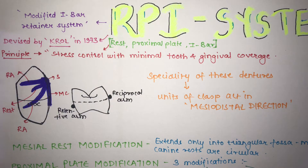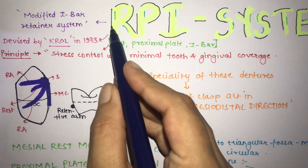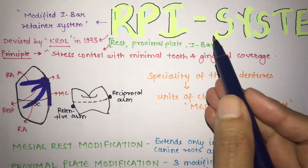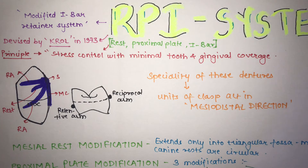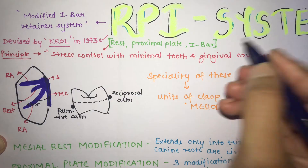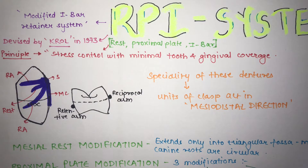The topic is the RPI system for removable partial dentures. There are various special types of removable partial dentures, and the RPI system is one of them. RPI stands for Rest, Proximal plate, and I-bar. The I-bar is a direct retainer. Direct retainers are classified as intracoronal and extracoronal; extracoronal are divided into occlusally approaching and gingivally approaching. The I-bar is a gingivally approaching type of direct retainer.